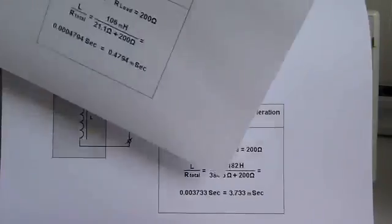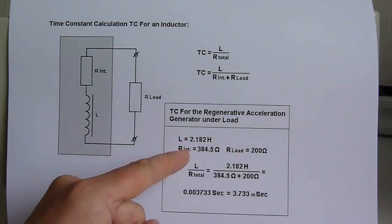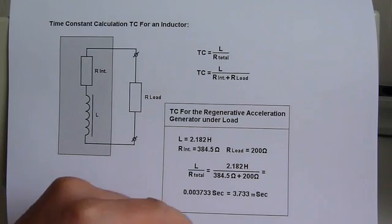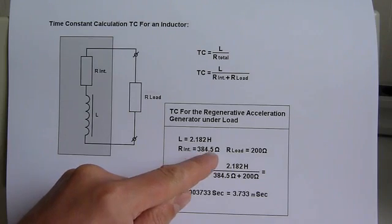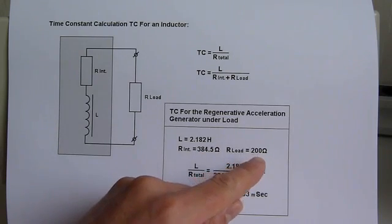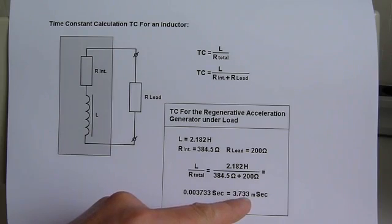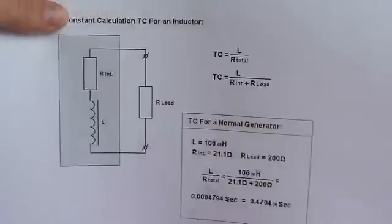Now let's do the same for the regenerative acceleration generator. I have used the same values as shown in my earlier replication video: 2.182 Henrys and an internal resistance of 384.5 ohms. When you hook up the same 200-ohm load, you get a totally different time constant. This value is much bigger than in the previous high-current low-impedance coil — in this case it is 3.7 milliseconds, which is almost 10 times bigger than the normal generator coil.